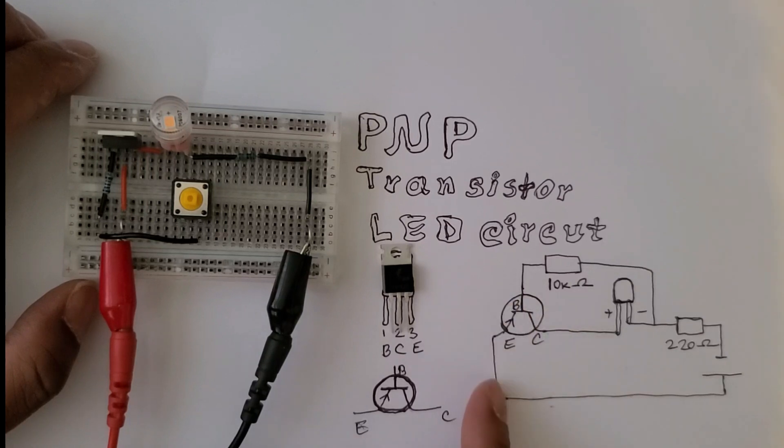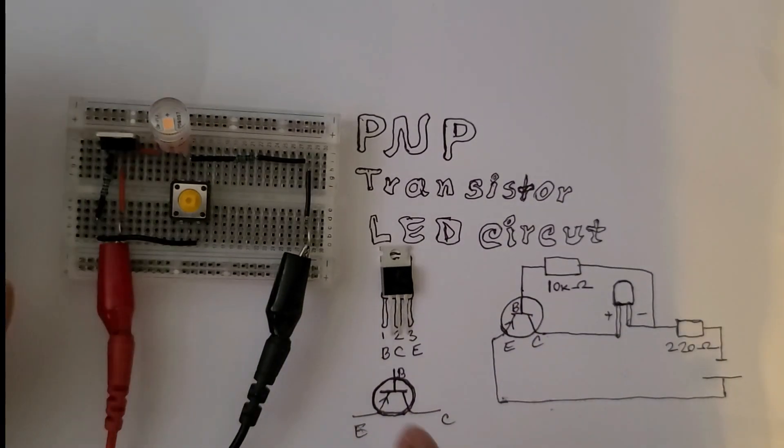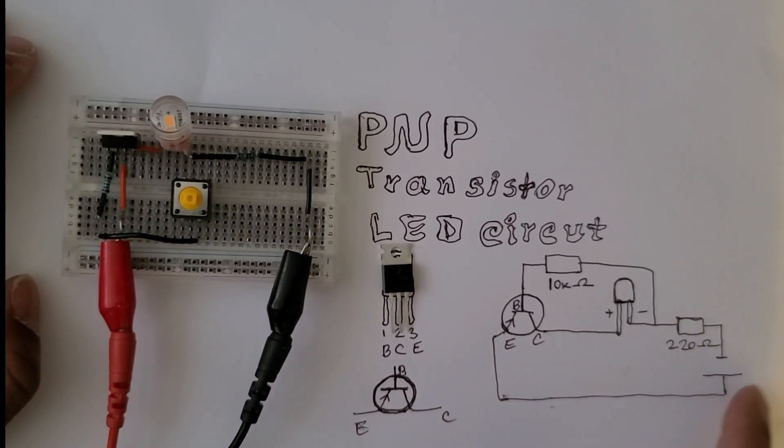Then the base is connected with the power rail. Sorry, the emitter is connected with the positive side.